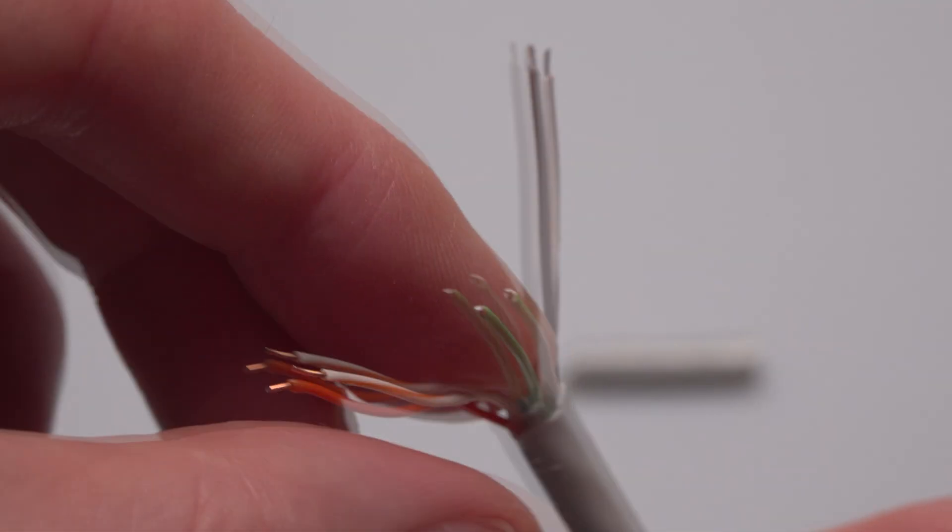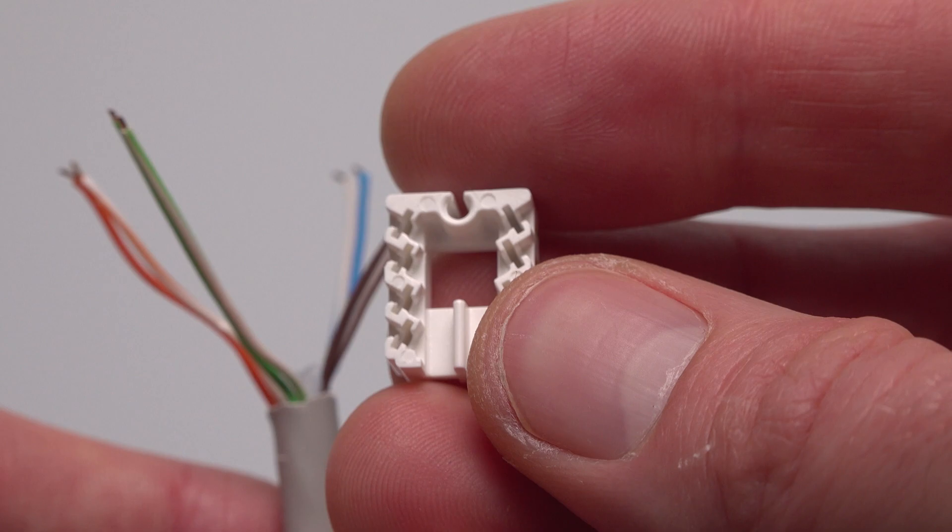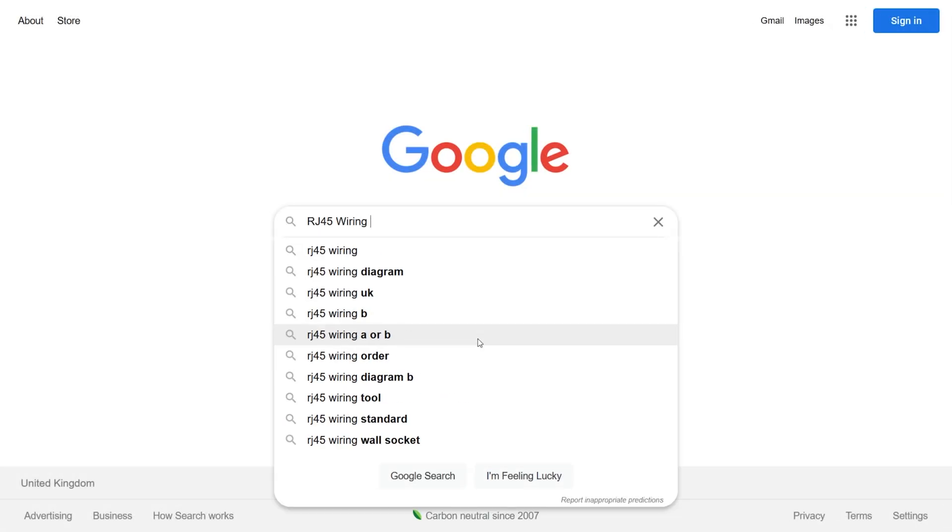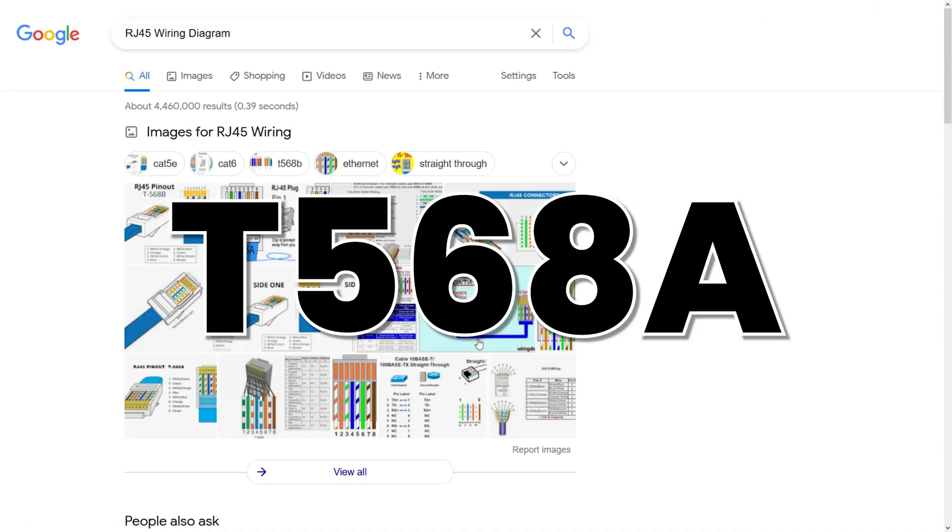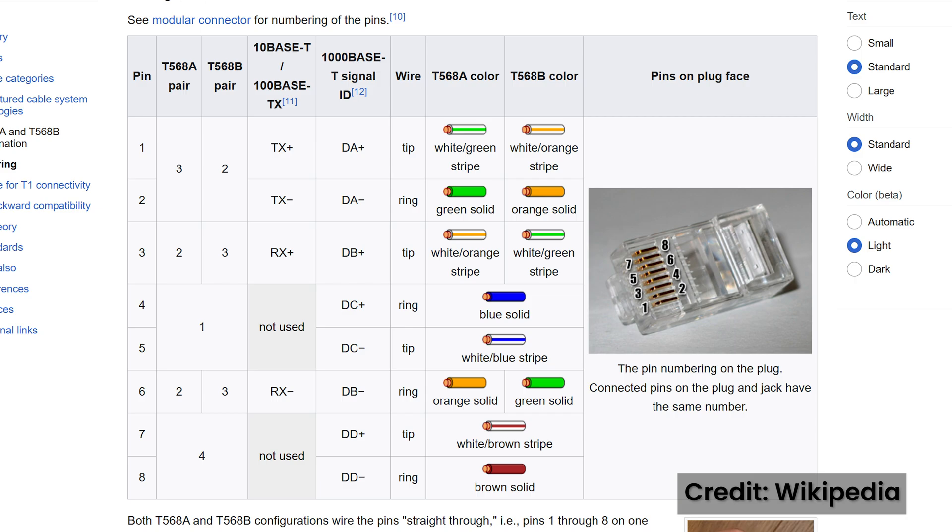Arrange them so that you have the oranges and greens on one side and the blues and the browns on the other side. Next we'll arrange the color coded wires into the correct places inside the connector cap. There are two main wiring standards for network plugs, T568A and T568B, the only difference is the greens and the oranges trade places.